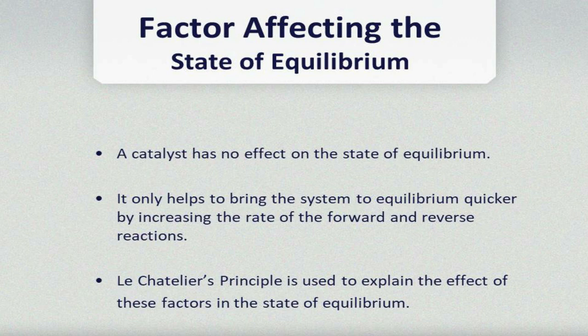A catalyst only helps to bring the system to equilibrium at a quicker rate, by increasing the rate of the forward and the reverse reaction. The catalyst cannot change the state of equilibrium — what it does is increase the rate of both the forward reaction and the reverse reaction. Remember, the point where the rate of the forward reaction and the rate of the reverse reaction are equal is referred to as dynamic equilibrium.